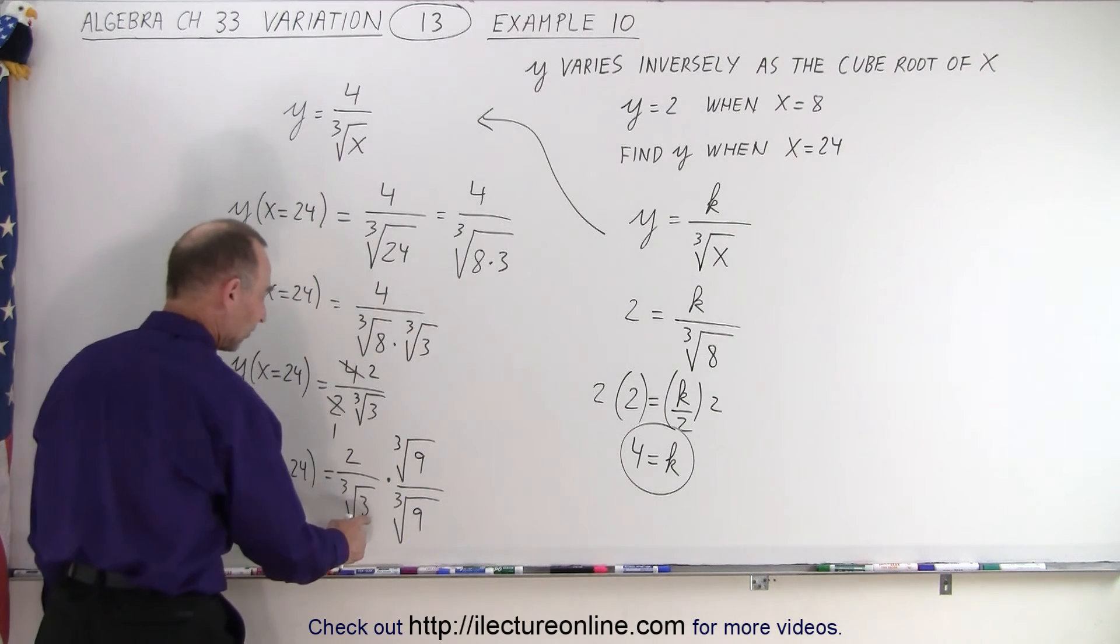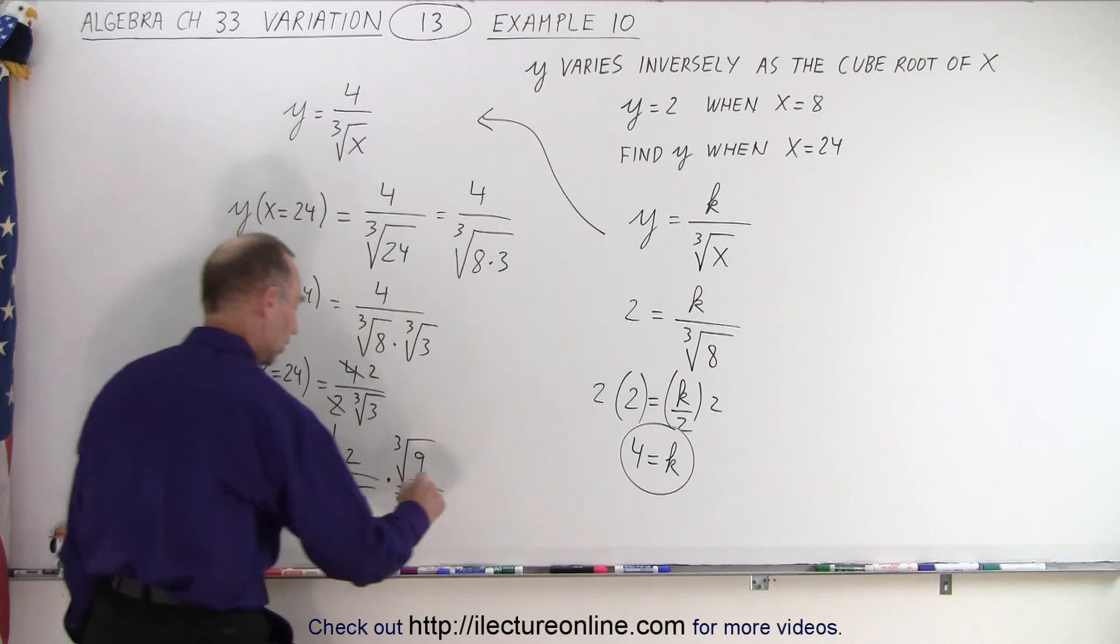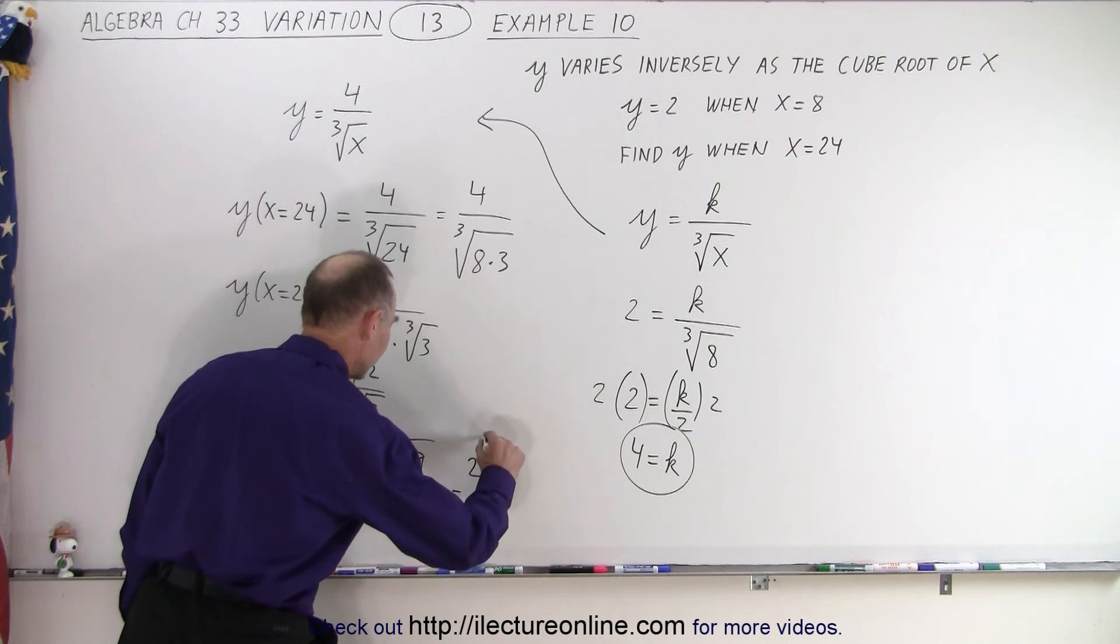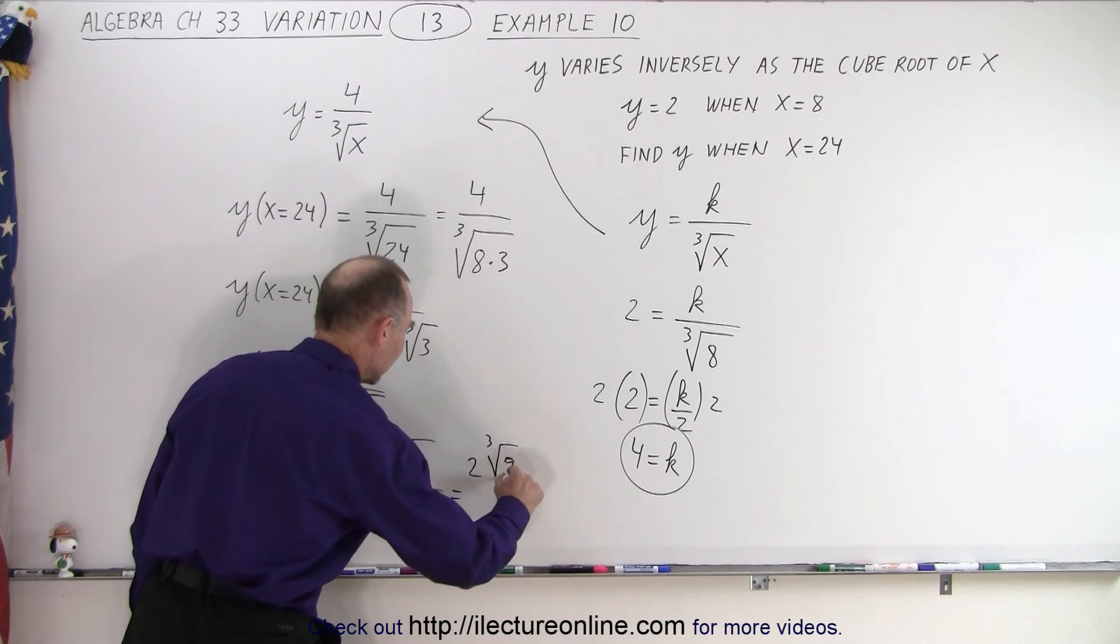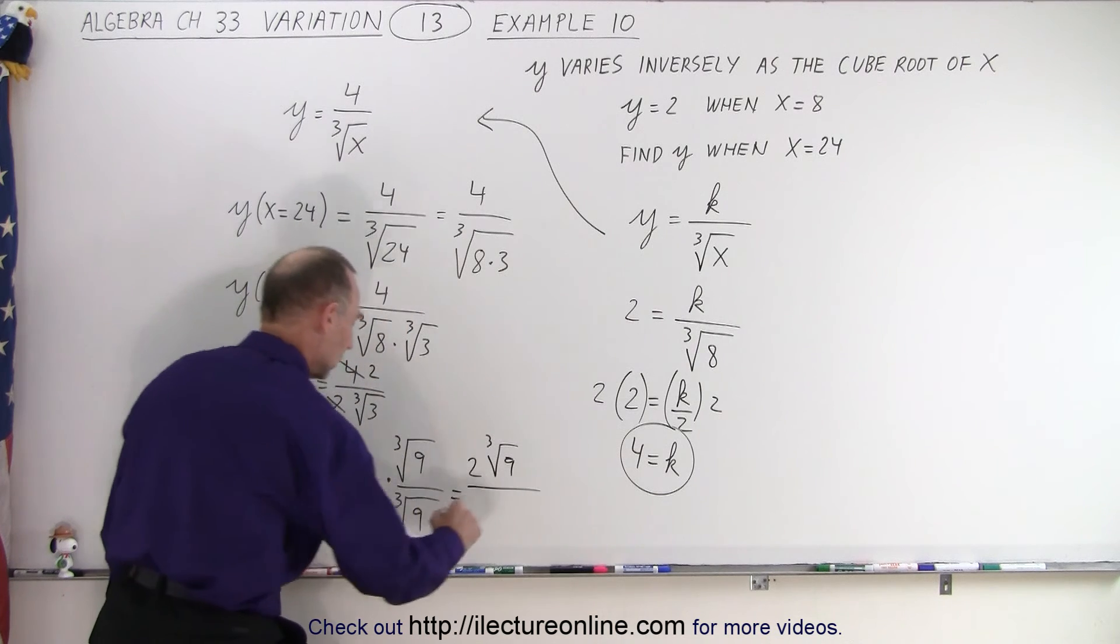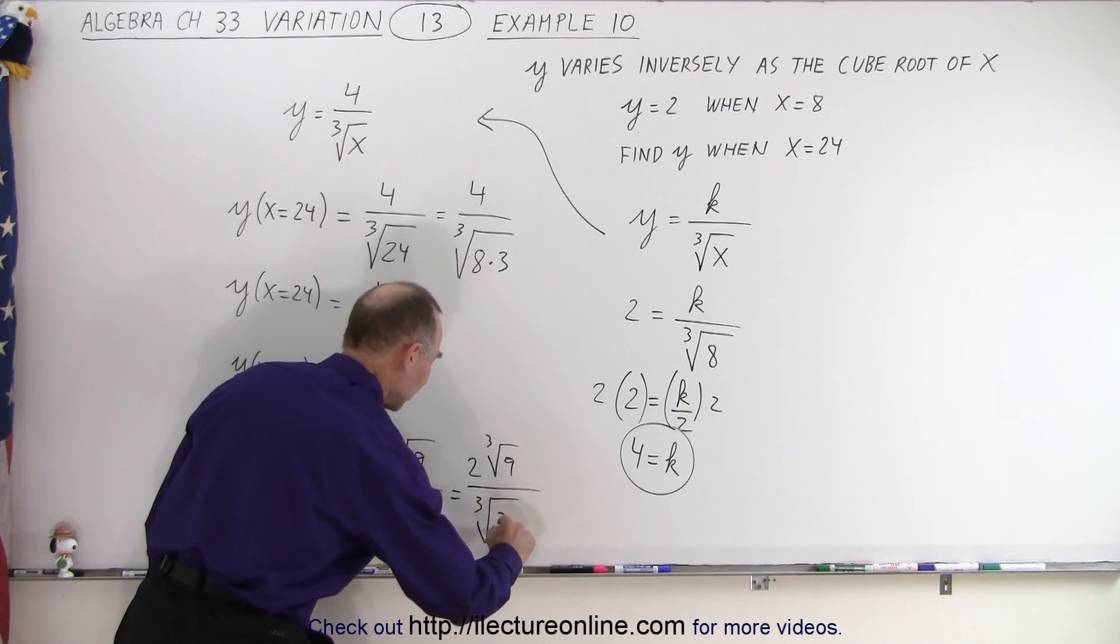But now notice I have 3 times 9, which is 27. So this is equal to 2 times the cube root of 9, divided by the cube root of 3 times 9, which is 27.